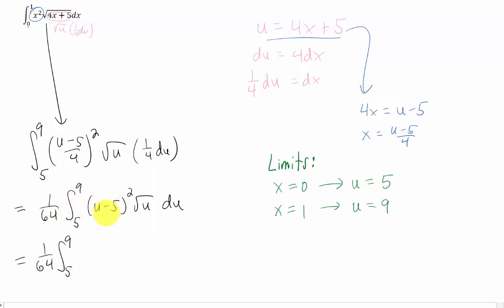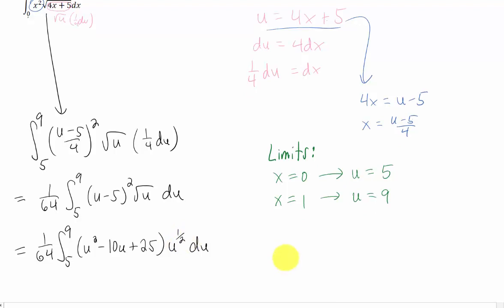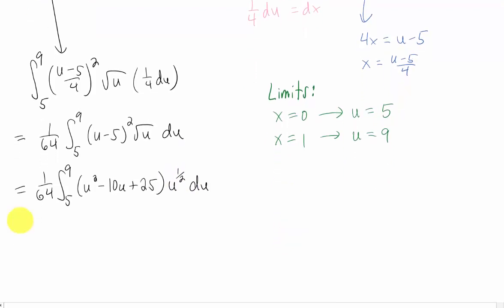Our next step would be multiplying or foiling this u minus 5 squared. If we do that and combine like terms, we get this. And I'm going to go ahead and write the square root of u as u to the 1 half. That makes it easier to multiply that u to the 1 half through the parentheses. And we're multiplying, so we're adding powers here.